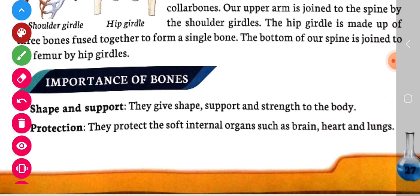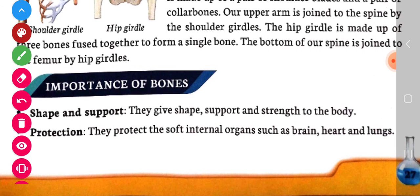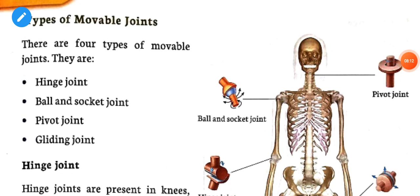Bones give shape, support, and strength to the body. They also protect the soft internal organs such as the brain, heart, and lungs, and many other parts of our body.